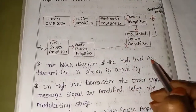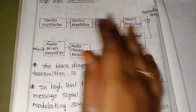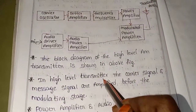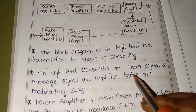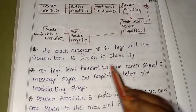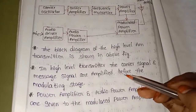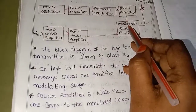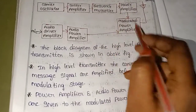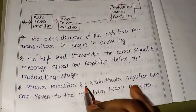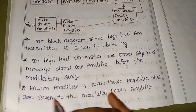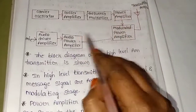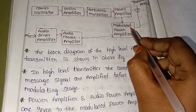The block diagram of the High Level AM Transmitter is shown in the above figure. In the High Level Transmitter, the carrier signal and message signal are amplified before the modulating stage. The outputs of the power amplifier and audio power amplifier are given to the modulated power amplifier as input.